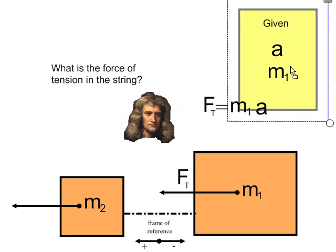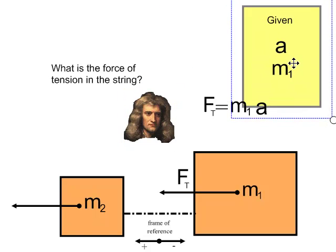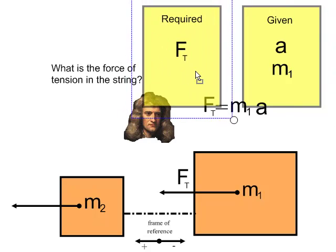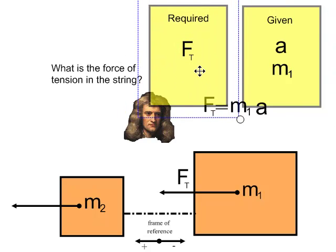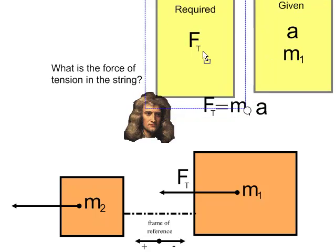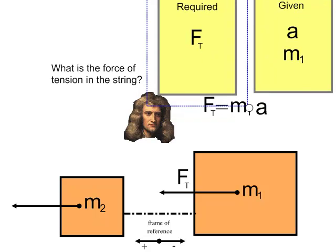Now I've already been given the acceleration. I just calculated that. That was a lot of work. And also, I know what m1 is, so all that's really required of me is to find the force of tension. So it's a simple matter of taking mass and multiplying it by the acceleration of the system that I've already calculated.